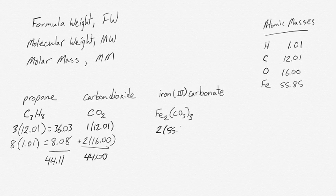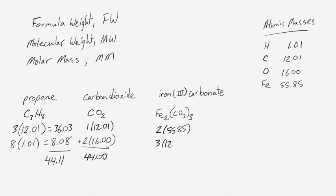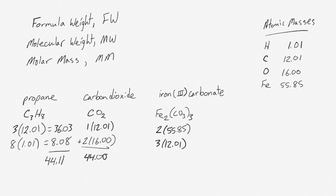So we have two irons, 2 times 55.85. We have one carbon in every single carbonate ion, but we have three carbonate ions, so we have three carbons. So three times 12.01.